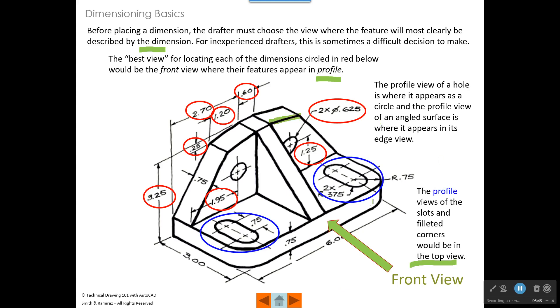So the two features that are circled in blue, which are these slots that look like stadiums, those would be in their profile in the top view. So we would put these dimensions that pertain to the slots in the top view. The others would go in the front view. And then there's a few dimensions like this 0.75 right here that may even go in the side view. So I've made a video on dimensioning the bracket and I will give you my opinions on where everything ought to be dimensioned in that video.